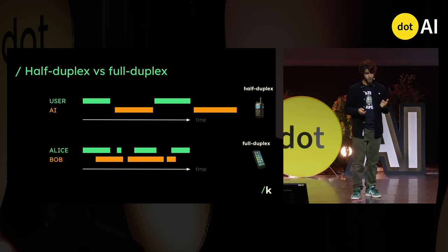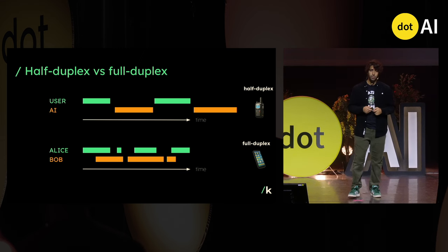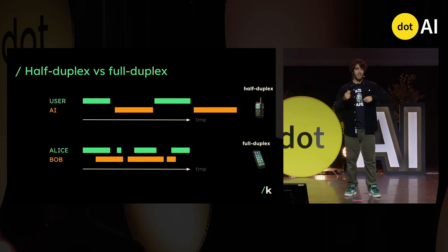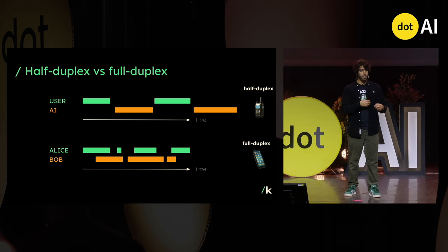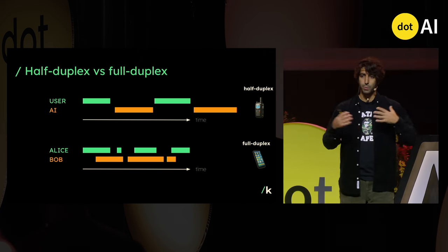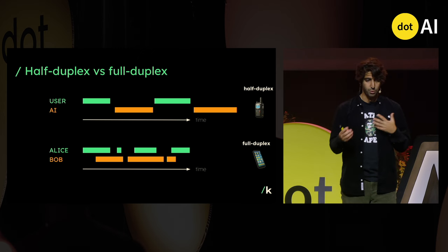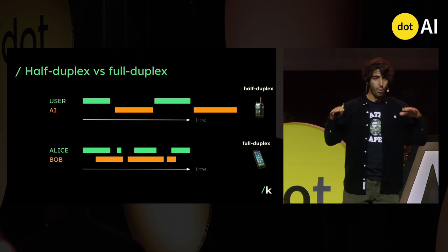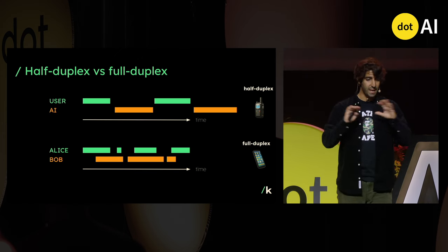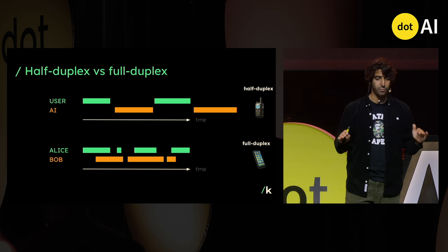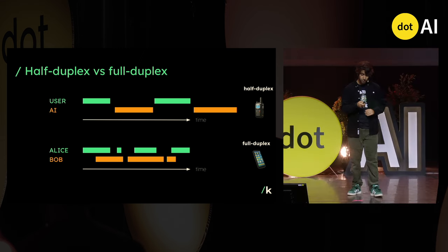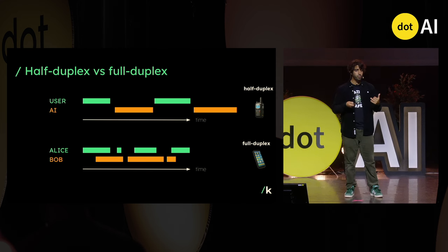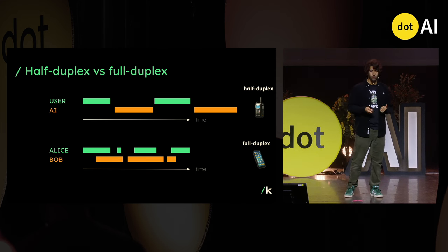In actual human conversation, there is overlap — sometimes you just say 'okay, I see' without interrupting the person. There are many moments where people speak at the same time. That's what we call a full duplex conversation, where both sides can be active at the same time with absolutely any kind of conversational dynamics — no constraints whatsoever. It's kind of what a phone provides as an experience compared to a walkie-talkie.